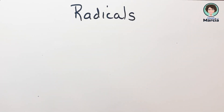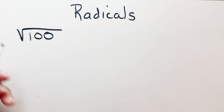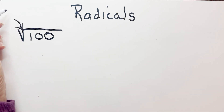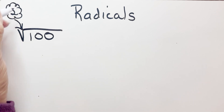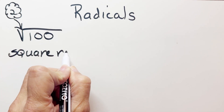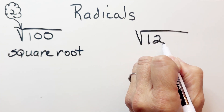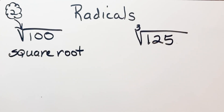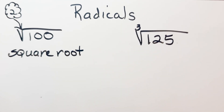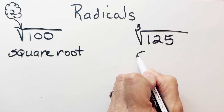Today we're going to be talking about what radicals are. You have a square root that may look something like this — there's an understood two in the index. This is called a square root. You also have something called cubic roots, which will always have a three in the index. We would say we have the cubic root of 125.